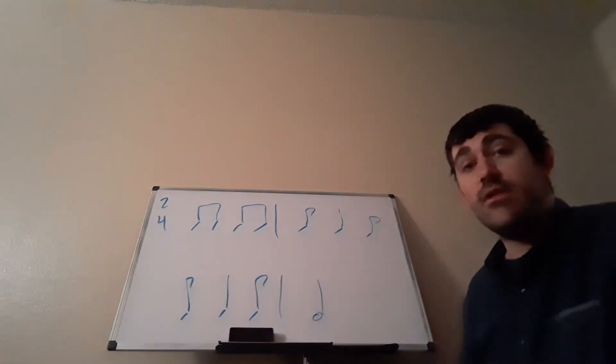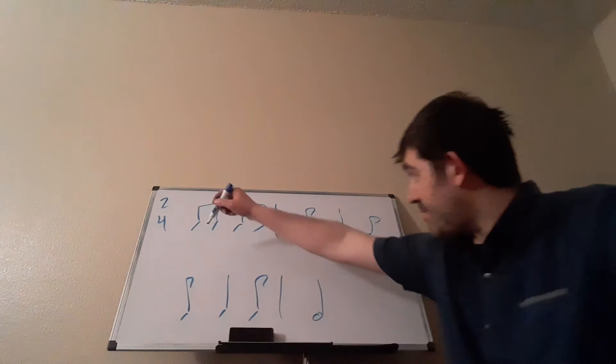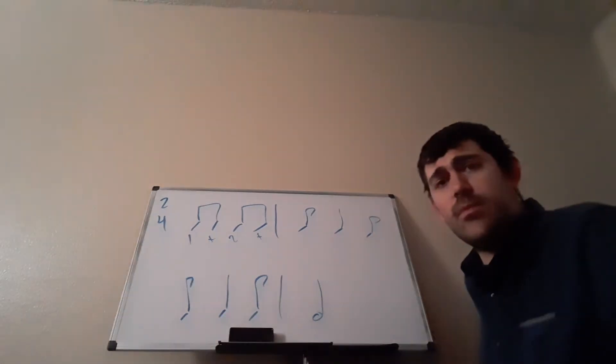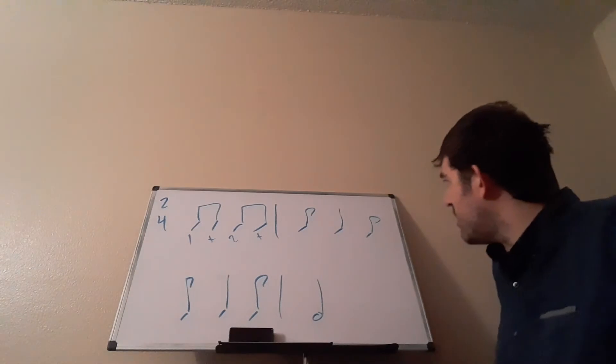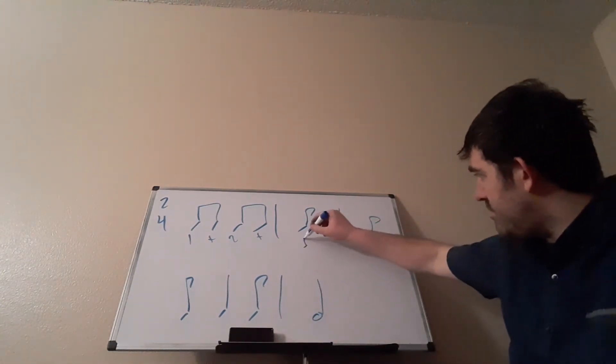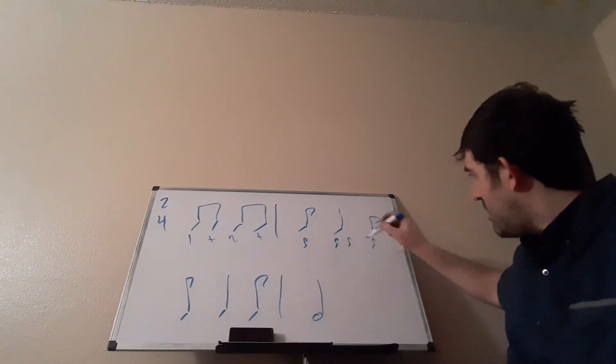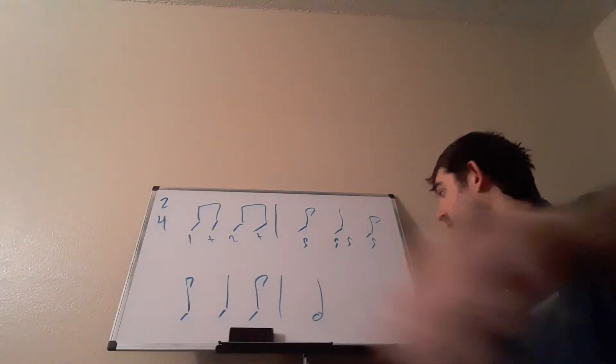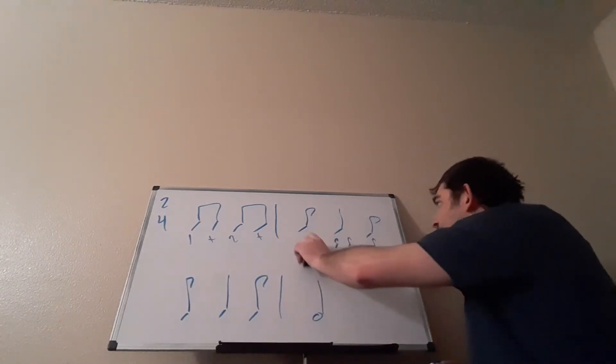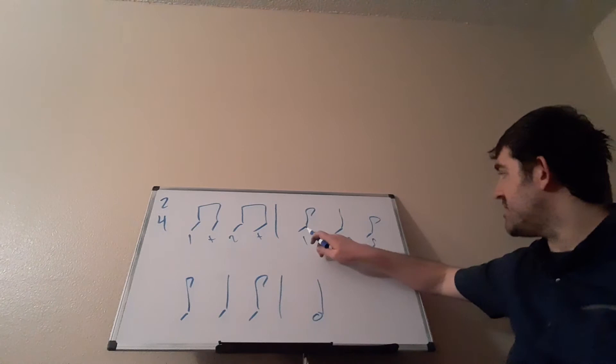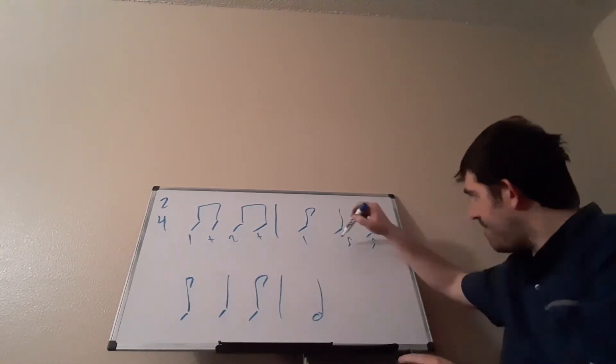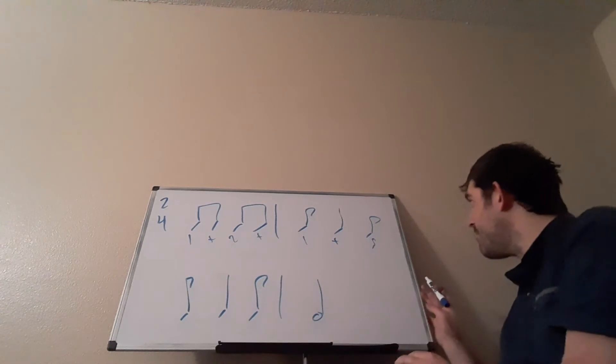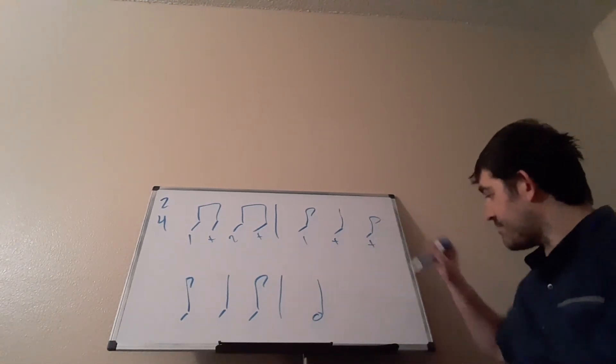So, measure one, we have eighth notes. Remember, we just count those, one, and, two, and. Measure two, this is the rhythm that we'll be working on this week. This eighth, quarter, eighth rhythm. So, first, we need to draw a skeletal pattern. An eighth note for an eighth note. Two eighth notes for the quarter. Then, let's figure out what beats they fall on. First note, the eighth note, that falls on beat one. Because it's an eighth note, this quarter note actually begins on the and of one. Since a quarter note is two eighth notes long, it takes up and two, meaning this last eighth note is on the and of two.